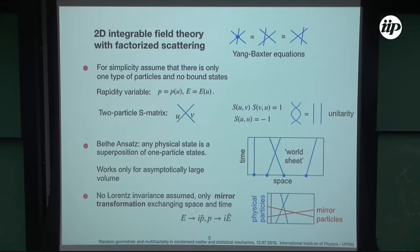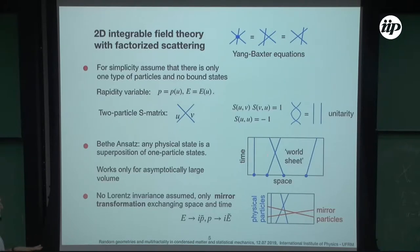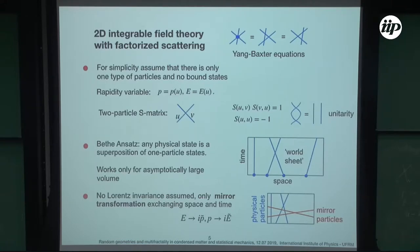The standard Bethe ansatz means that any state in an integrable system can be written as a superposition of plane waves. An N-particle wave function is a sum of products of one-particle wave functions, which are simple plane waves. Particles in such a state can scatter among themselves. I will not assume Lorentz invariance, but I will assume there is a mirror transformation from the physical theory to the mirror theory, which exchanges space and time. In Euclidean theory, a double Wick rotation exchanges Minkowski space and time, and similarly for energy and momentum.